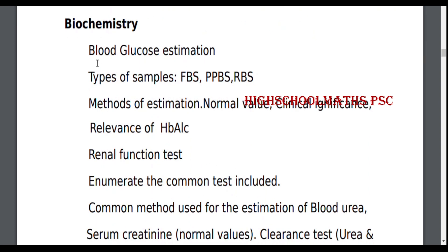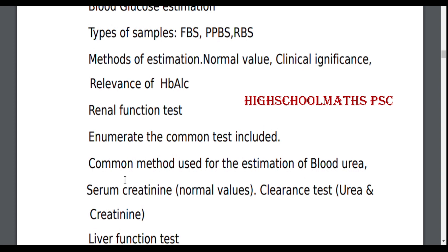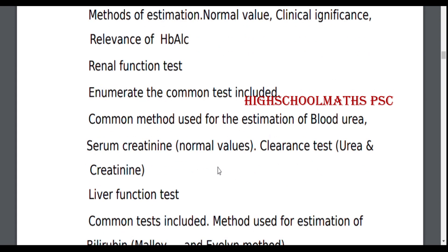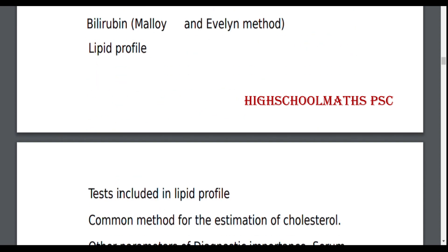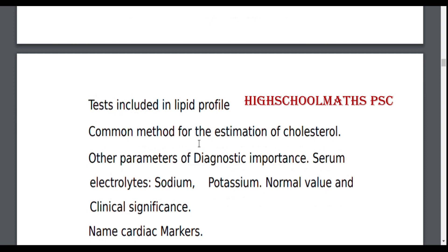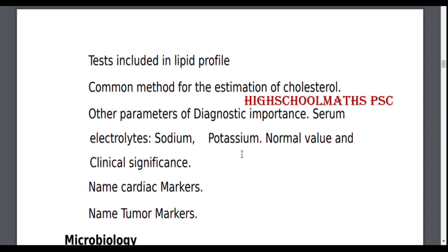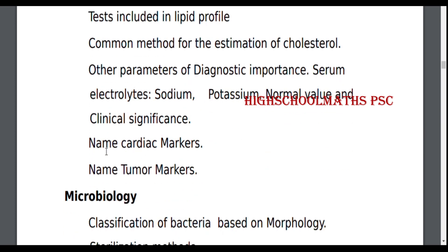Biochemistry: Blood Glucose Estimation — Types of Samples (FBS, PPBS, RBS), Methods of Estimation, Normal Values, Clinical Significance, Relevance of HbA1C. Renal Function Test — common tests included, common methods for estimation of Blood Urea, Serum Creatinine, Clearance Test. Liver Function Test — common tests included, Bilirubin. Lipid Profile — tests included, common method for estimation of Cholesterol. Other parameters of diagnostic importance: Serum Electrolytes (Sodium, Potassium), Normal Values and Clinical Significance, Cardiac Markers, Tumor Markers.